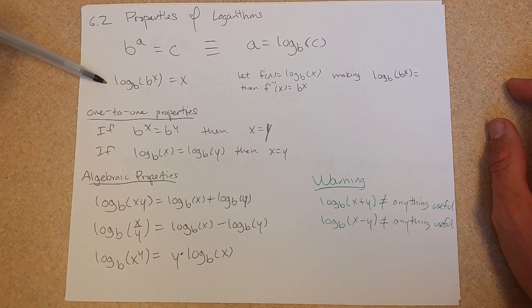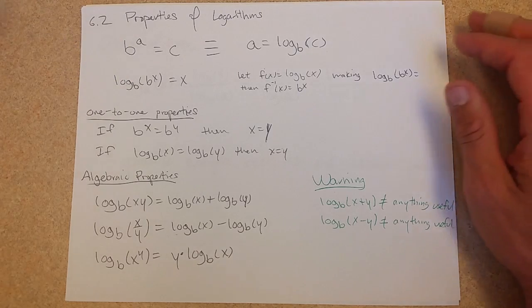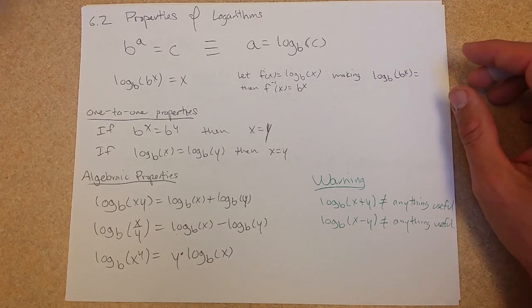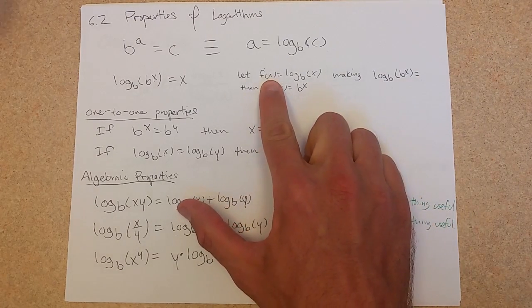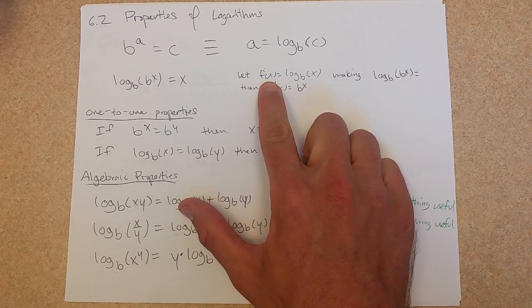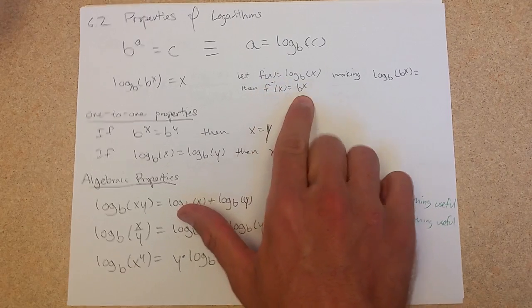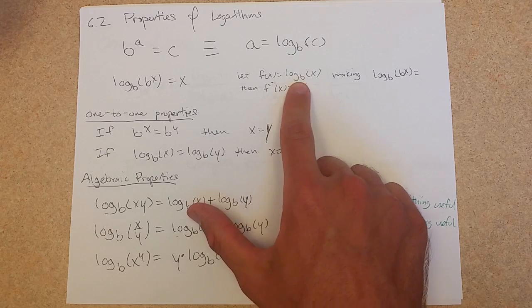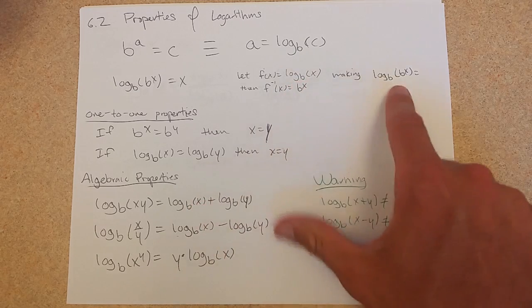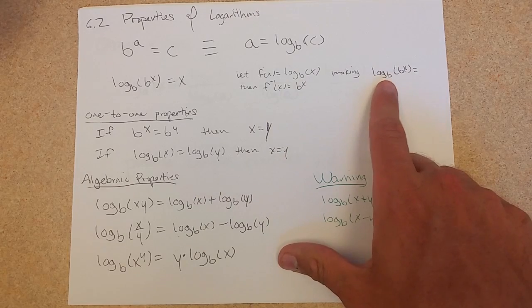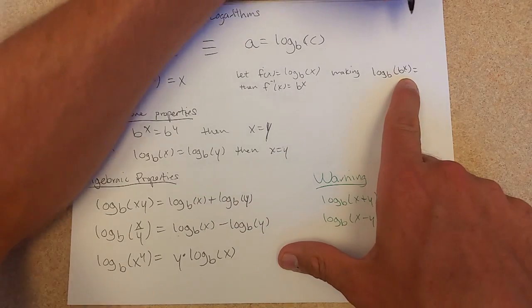Another property, when you compose a logarithm and an exponent, they cancel out. And why is that? Because they're inverses. And if we let log base b of x be f, the inverse is the exponential. That's just what the logarithm was defined to be, the inverse of an exponential. So we have log base b of b to the x.